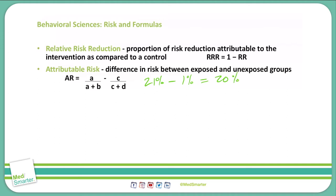We can express that as a percentage using the calculation: relative risk minus 1, times 100, equals the attributable risk percentage.